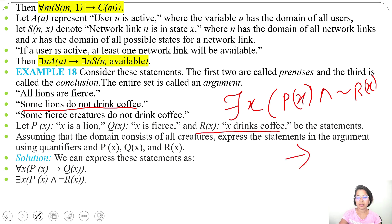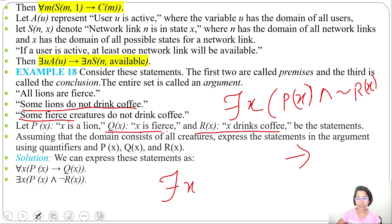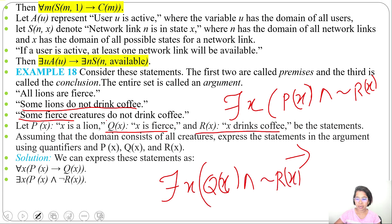For the third statement, 'some fierce creatures do not drink coffee': there exists x such that x is fierce — Q(x) — and x does not drink coffee — negation of R(x). So the expression is: there exists x, Q(x) and negation of R(x).